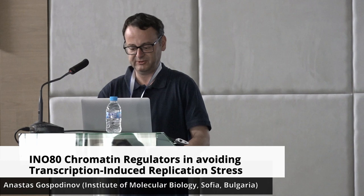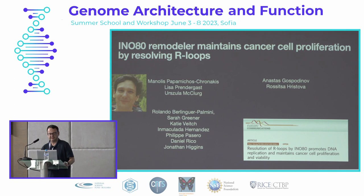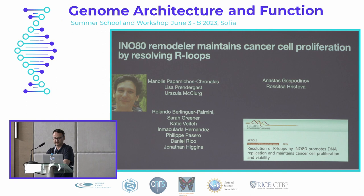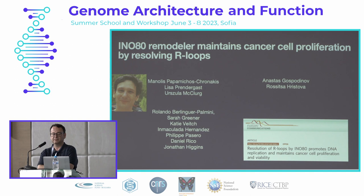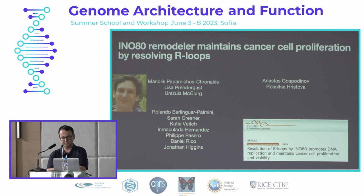Good afternoon. First I would like to thank everybody who was involved in making this exceptional meeting possible. I will be talking today about the INO80 Chromatin Regulators in Avoiding Transcription-Induced Replication Stress. The first story I hope to tell you is about the role of the INO80 Chromatin Remodeler in maintaining cancer cell proliferation by resolving R-loops. This was a collaboration between my laboratory and that of Dr. Manolis Papamikos Hronakis, and many other people contributed greatly to this.